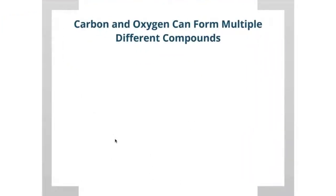The law of multiple proportions can be explained by the fact that carbon and oxygen, or any two elements, can form multiple different compounds. In this example, I'm using carbon and oxygen.